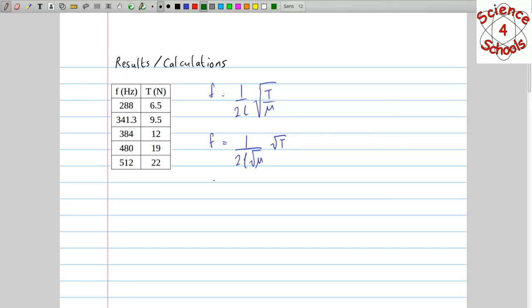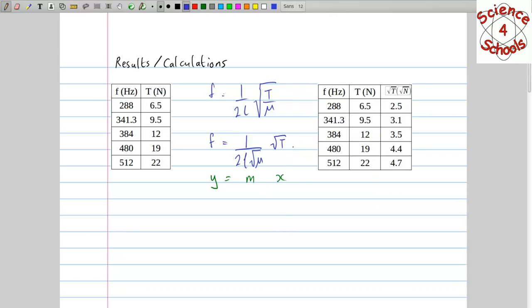So if we're plotting one variable against another one we need to decide which is going to be on which axis. Let's say for example we say that y is the frequency. Then we're going to have the slope is 1 over 2L times the square root of the mass per unit length. And then the x axis is going to be the square root of the tension. So before we can graph this we need to know exactly what the square root of the tension is in each case. And so here's just an extra column with those results in it, just square rooting the tension. Now we have that information we can actually graph it.